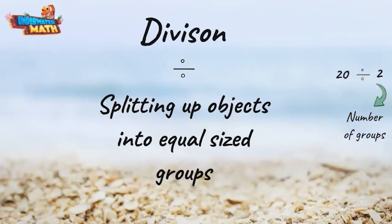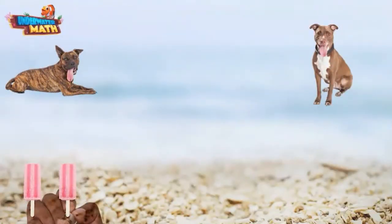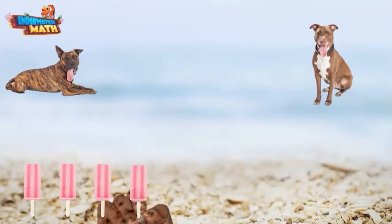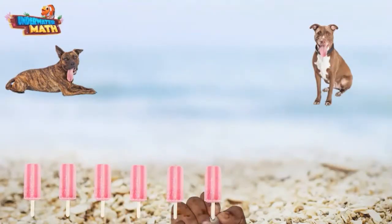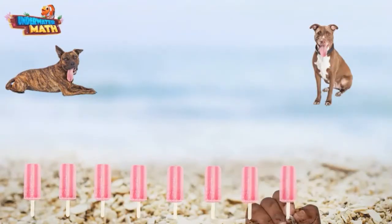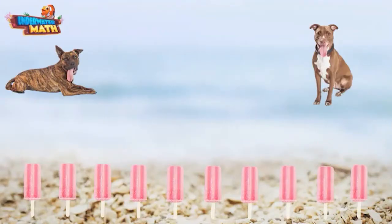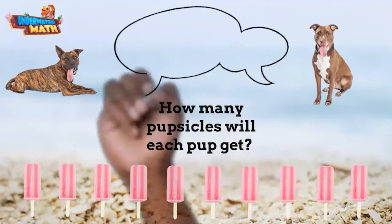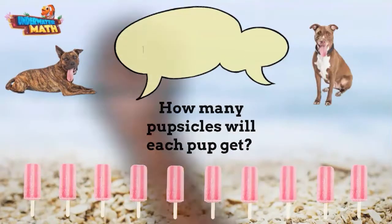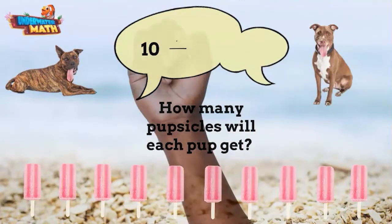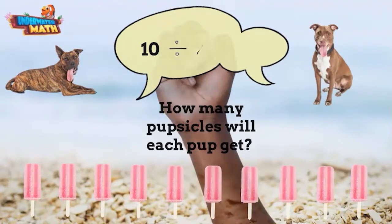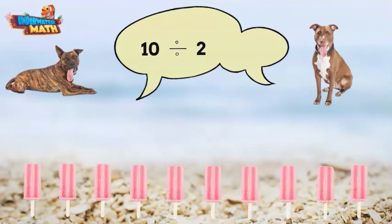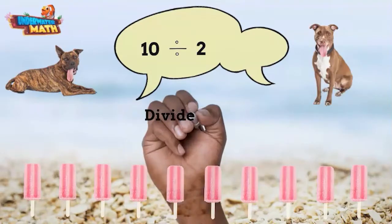Let's look at an example. It's beach day and we have two very hot pups thirsting for some popsicles. There are 10 popsicles to be shared between the two of them, and we need to know how many popsicles each pup will get if they share them equally. We can write this equation as 10 divided by 2, which says 10 popsicles divided by 2 pups.